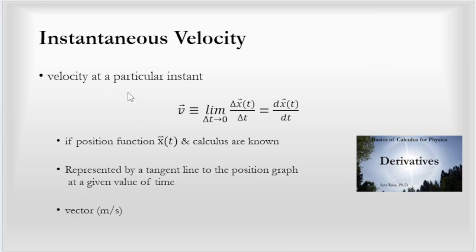When I look at that velocity at a particular instant, what I'm doing is I'm taking the limit of the differential of the position function. So the function will be represented with time as an input variable, and we'll take the differential with respect to time of that position function. The derivative is represented by a tangent line to the position graph at a given value of time. If you imagine a graph that's curvy, at each different point the tangent line is going to have a different slope.